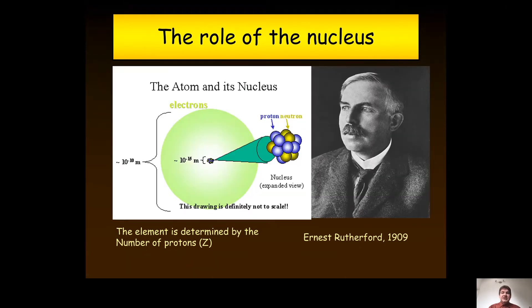At the heart of each atom is the atomic nucleus. It was discovered by Ernest Rutherford in 1909 using a famous experiment named after him. The nucleus is made up of positively charged protons and electrically neutral neutrons, while the negatively charged electrons occupy the vast majority of the atomic volume.